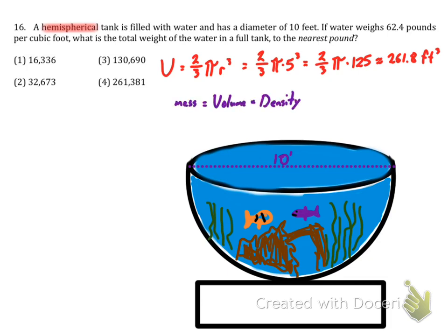Now, remember, mass equals volume times density. Or in this case, we're going to talk about weight. So the weight is the volume of this times its density. We know its density in this case is 62.4 pounds per cubic foot. So I'm going to go ahead and multiply these two things.